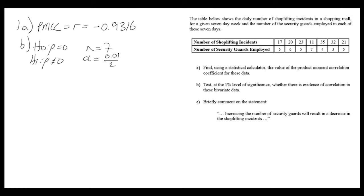From there we get n equals seven - there are seven days of data. The significance level is going to be divided by two because of the two-tailed test.